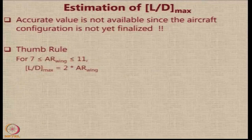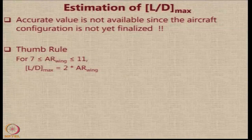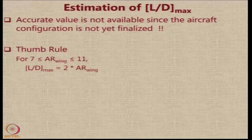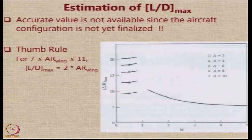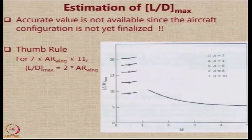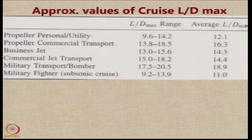There are certain thumb rules available, some guidelines available. One simple guideline is as a function of the wing aspect ratio. For aircraft which have aspect ratio between 7 and 11, which is the typical value for many low-speed transport aircraft and regional turboprops, you can assume L/D max to be twice the wing aspect ratio based on this particular graph. However, please note this is only a very crude estimate and maybe this is to be used as a starting value. I do not recommend using this value in the calculations — this is just a very basic value.